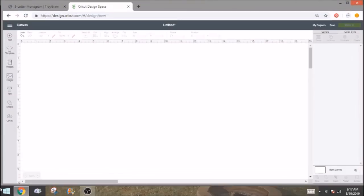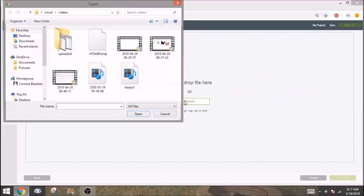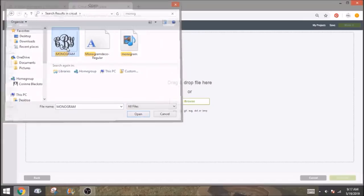And we'll go over to design space and click on upload. Mine always does that. I don't know if anyone else does, but mine totally likes to open the picture after I've saved it. So go to upload image, click on browse. You'll go to your Cricut folder and you'll find your monogram. It should come up no problem.